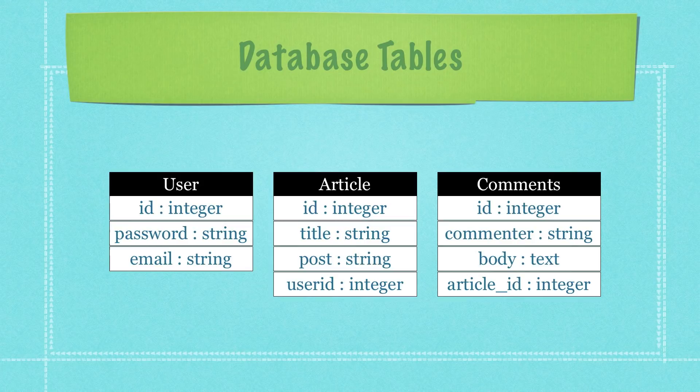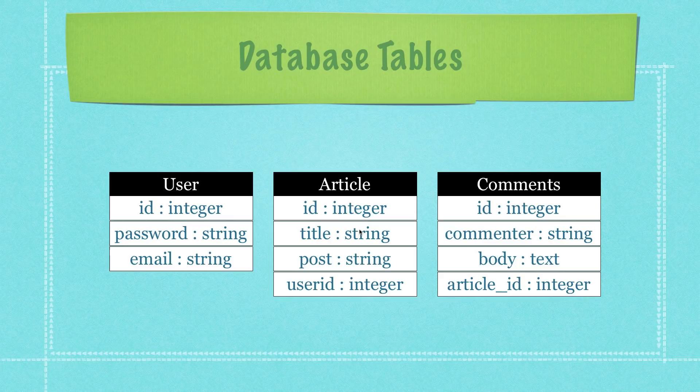Now we need to create our database tables. We'll have a User with an ID (auto-incremented automatically), a password string, and an email string. Then Articles with an ID (auto-created), a title string, a post string, and a user_id integer that links to the users table. And Comments with an ID, a commenter field, the body of the comment, and an article_id that matches into our articles table.